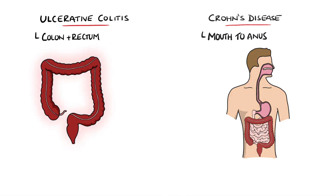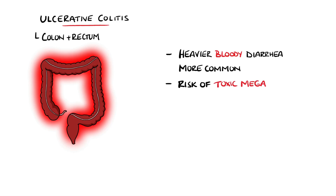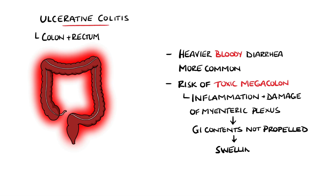More specifically for ulcerative colitis, heavy bloody diarrhoea is more likely than in Crohn's disease, as is the risk of toxic megacolon — a condition in which the colon becomes swollen and enlarged due to inflammation and damage to the myenteric plexus, preventing it from passing bowel contents. This leads to a build-up of gas and feces, and is a risk for perforation and sepsis.